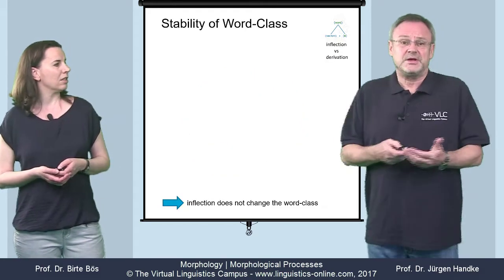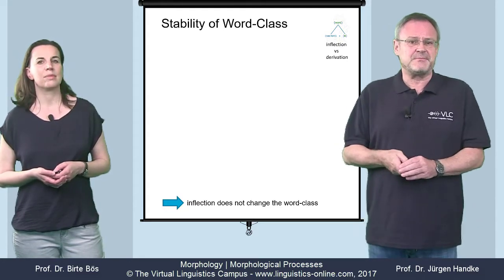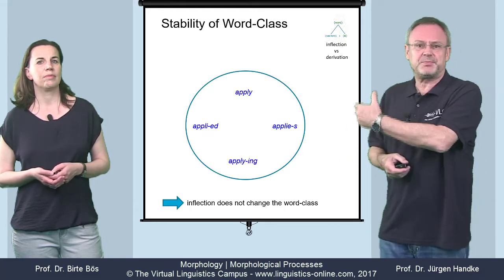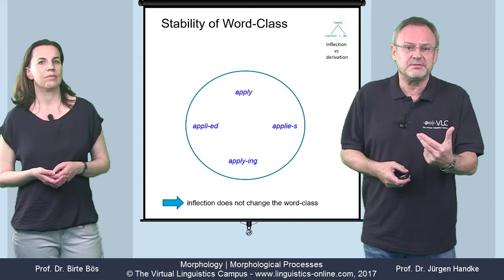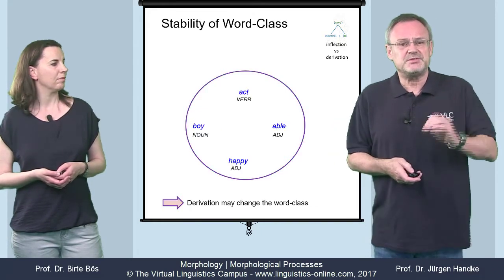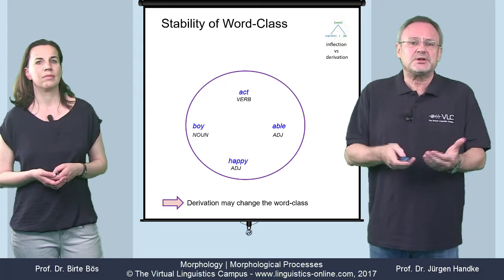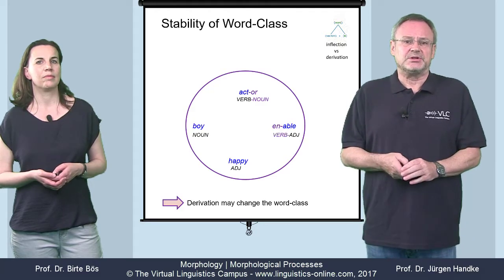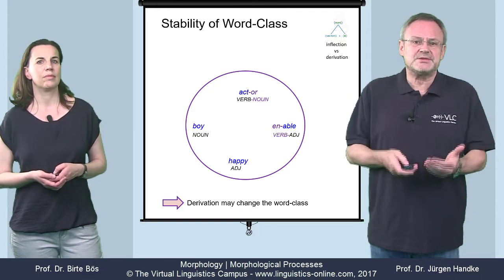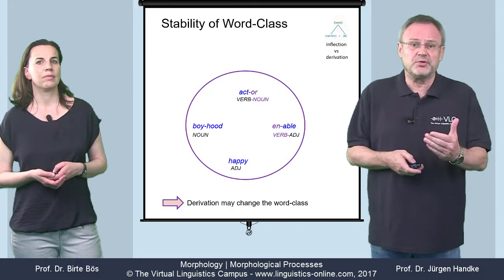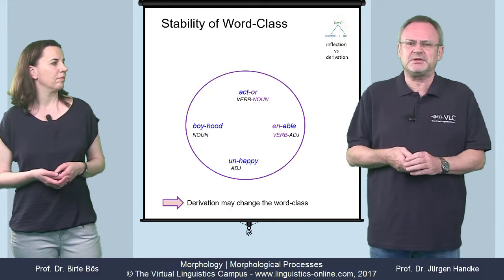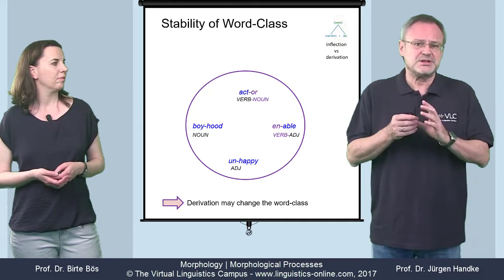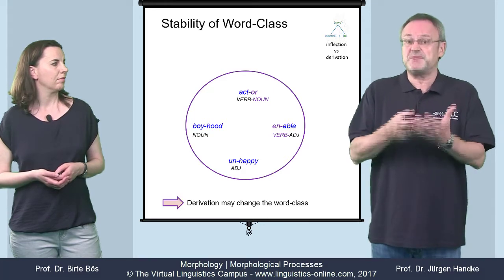Furthermore, inflection does not change the word class of the stem, but derivation may do so. Take apply, applies, applying, and applied — they're all verbs. In derivational processes, by contrast, the word class may change, as in act/actor, or able/enable. But it may also remain the same, as in boy/boyhood — both are nouns — or happy/unhappy, where both are adjectives. To make it absolutely clear: inflection never changes the word class, but derivation may do so.